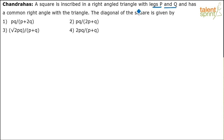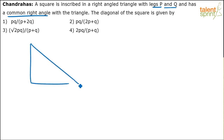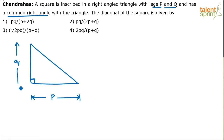The square has a common right angle with the triangle. Let's draw the diagram first. This is the right angle triangle — here's the right angle. The legs are p and q, so one leg is p and the other is q. Let the triangle be ABC.